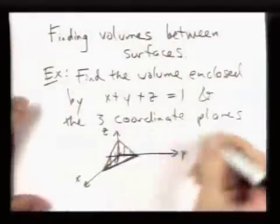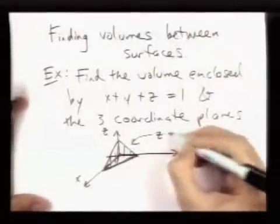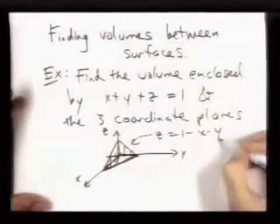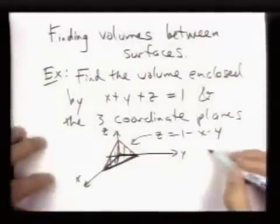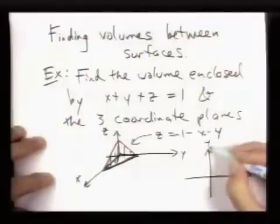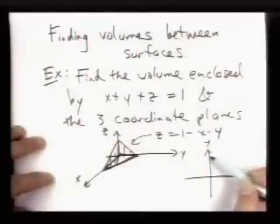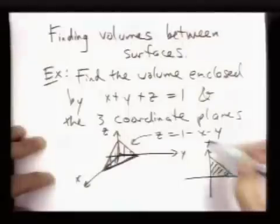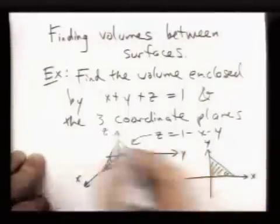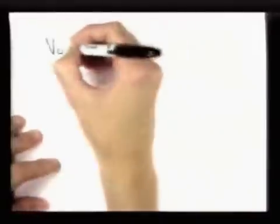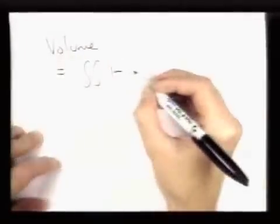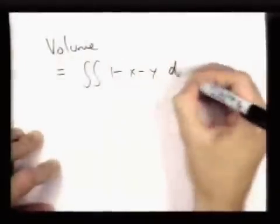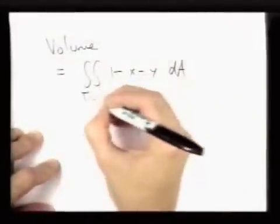But the trick is that now we have this function z equals 1 minus x minus y, and what we're really doing is integrating this over this triangle on the xy plane. So that triangle is really this. So the volume enclosed by this plane and the 3 coordinate planes is going to be the double integral of the function over the triangle, which I'll call t.